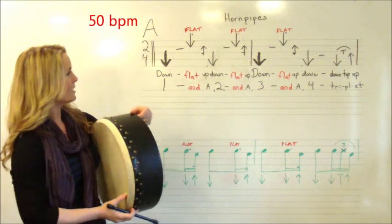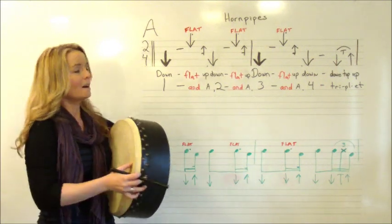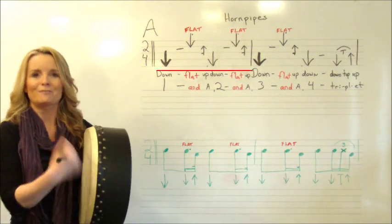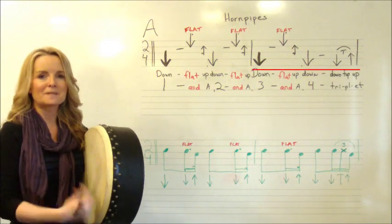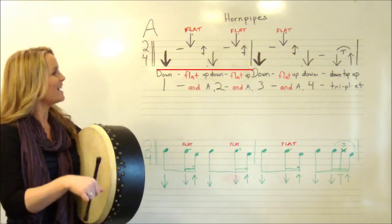We'll try it really slowly at 50 beats per minute. If you find this too slow, just fast forward through the video until you find the speed that is a bit challenging for you. We'll try to get the hand at the back going. If you find that too confusing, at first just try to get the pattern. Here we go at 50: down, flat, up, down, flat, up, down, flat, up, down, triple it down.